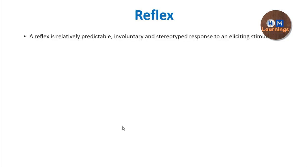Reflex is involuntary. It is relatively predictable — in response to touching a hot cup, you are going to withdraw your hand. It is a predictable response in almost all normal individuals, and this is a stereotyped response which is a kind of fixed response. In response to a particular stimulus — and the stimulus has to be precise, not every stimulus will trigger the reflex — only an adequate stimulus will get an adequate response, and only that is called a reflex.